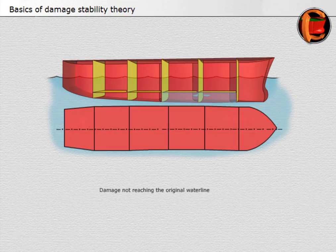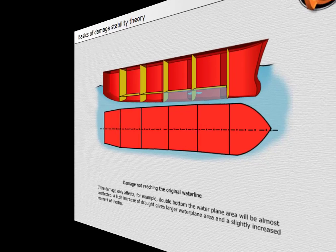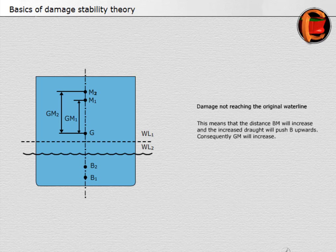Damage not reaching the original water line: if the damage only affects, for example, the double bottom, the water plane area will be almost unaffected. A little increase of draft gives a larger water plane area and a slightly increased moment of inertia. This means that the distance BM will increase, and the increased draft will push B upwards. Consequently, GM will increase.